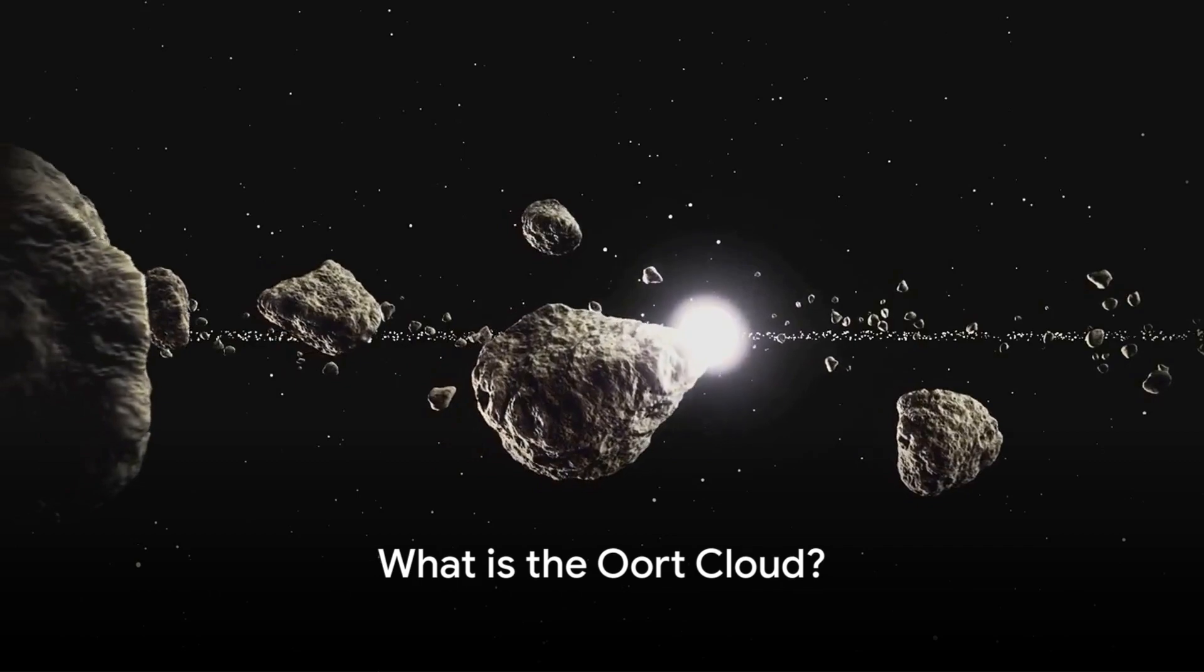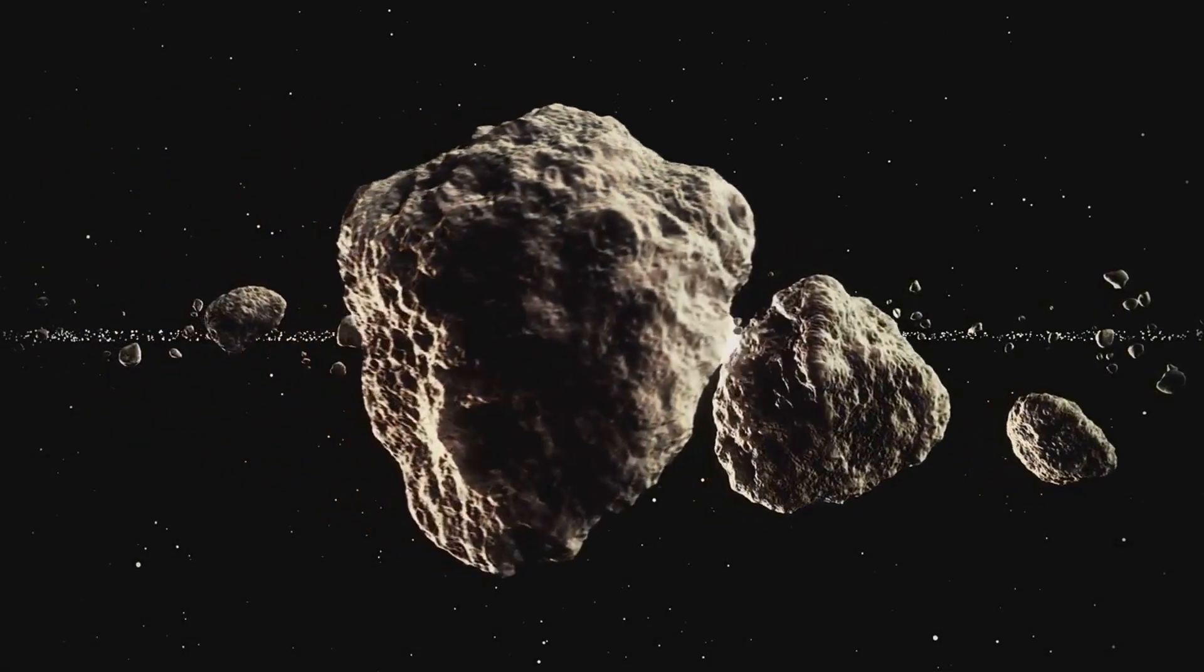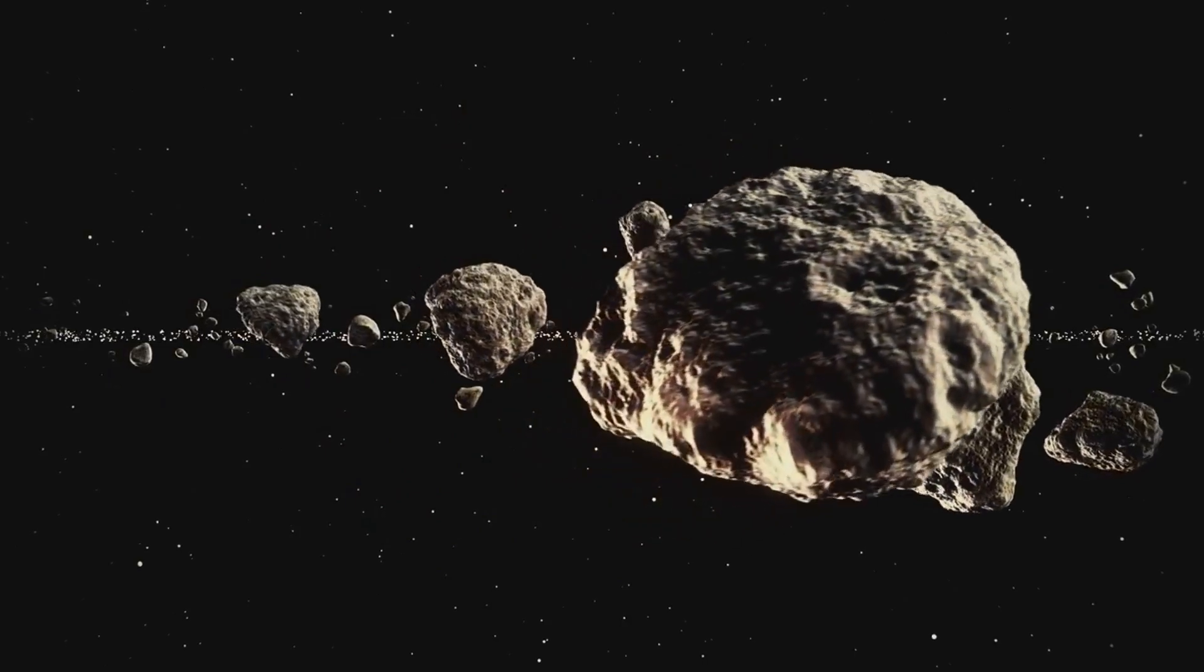The Oort cloud is a hypothetical region of the solar system that is believed to be the source of long-period comets. It is located far beyond the Kuiper belt.